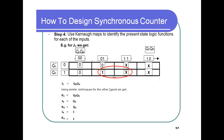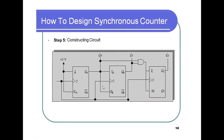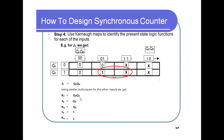Next, Karnaugh maps are applied to each flip-flop input. From the K-maps, JC = QB·QA, KC simplifies similarly. All input functions JA, KA, JB, KB, JC, KC are derived. Then the circuit is drawn: Q0 connects to JB and KB; Q0 AND Q1 connects to JC and KC.